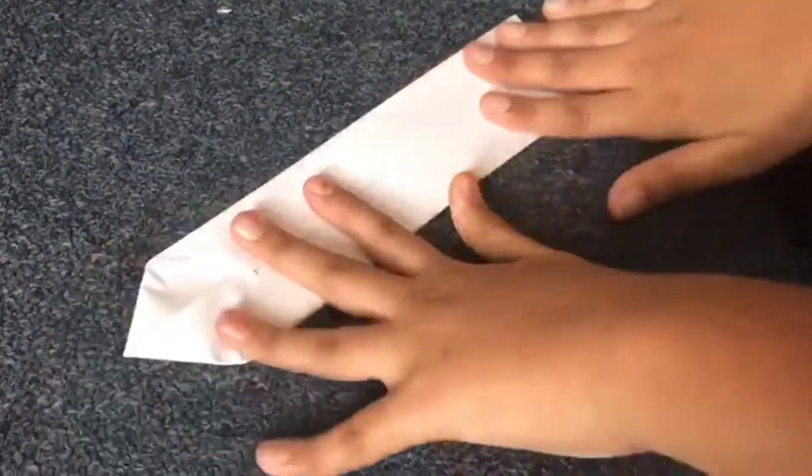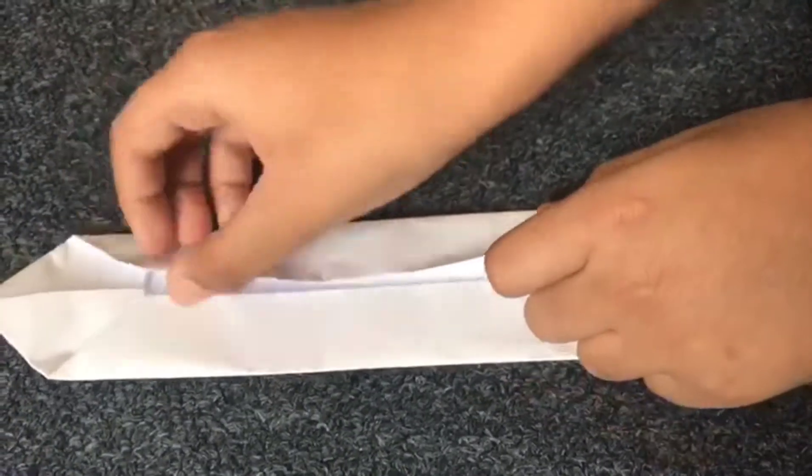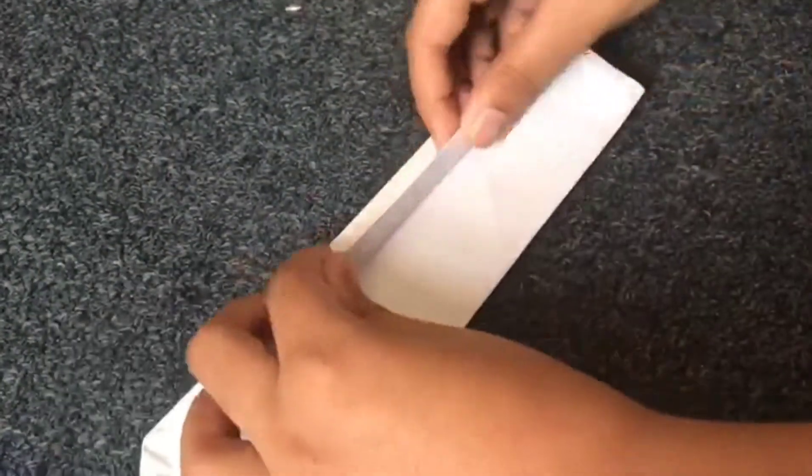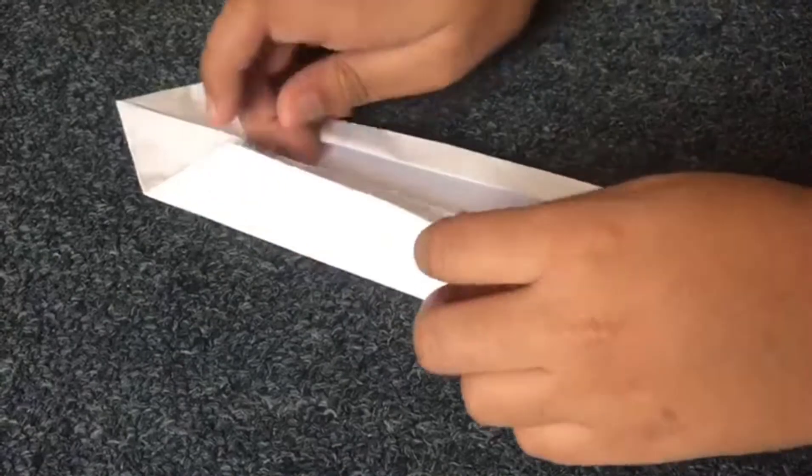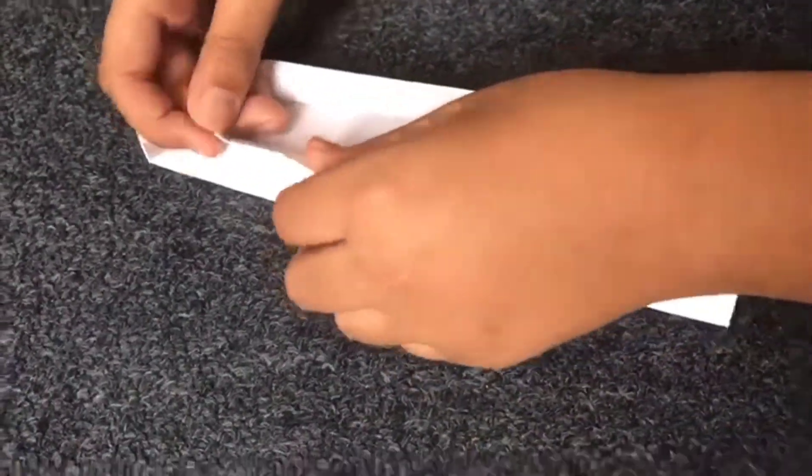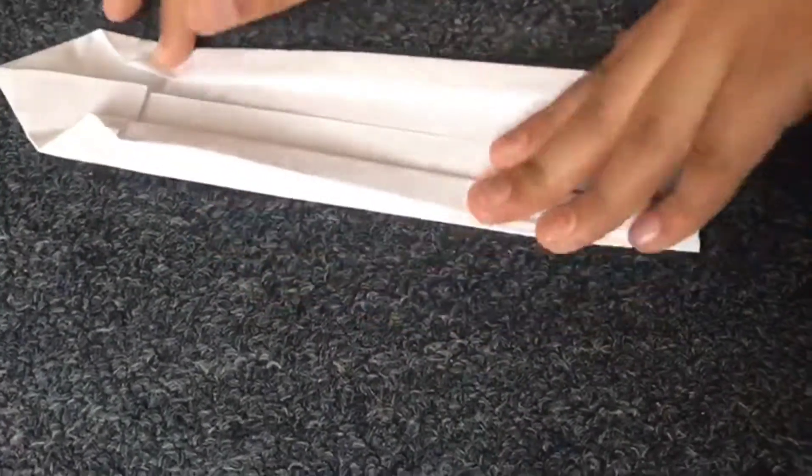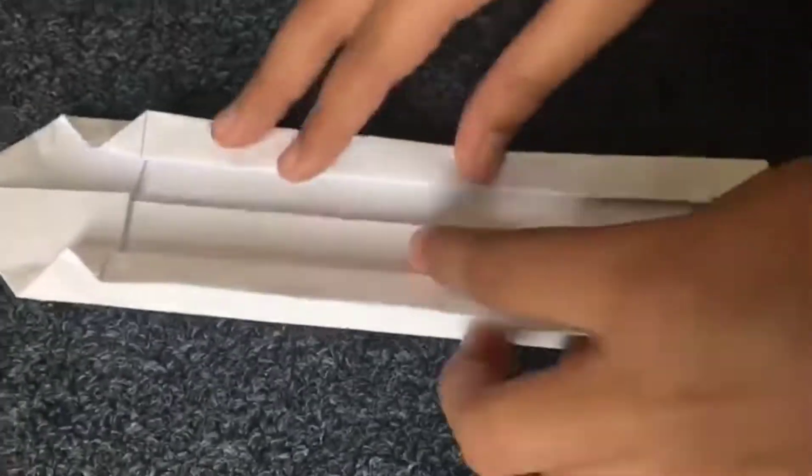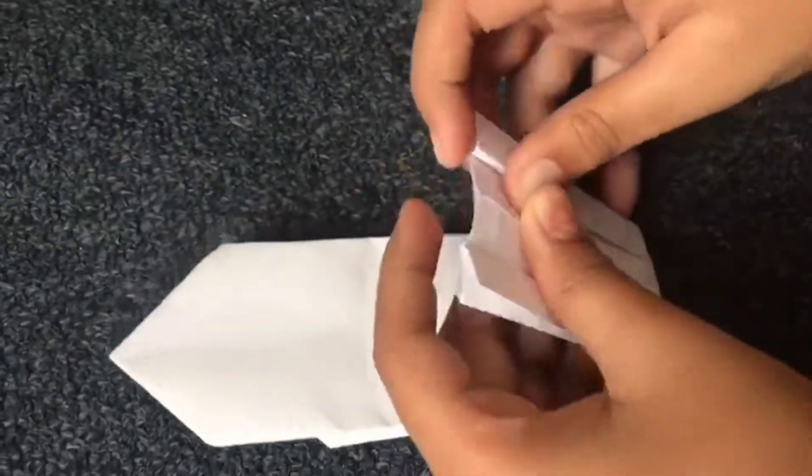Now press firmly on each side and again further fold it as I am showing you now. So basically we are folding it twice. As you can see, once you get the hang of it, it is very easy. So you can color it as well or you can use color paper as well.